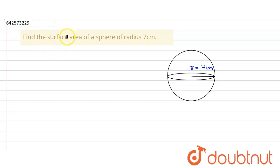In the given question we have to find the surface area of a sphere of radius 7 centimeter. So here radius is given is equal to 7 centimeter. So we have to find the surface area.